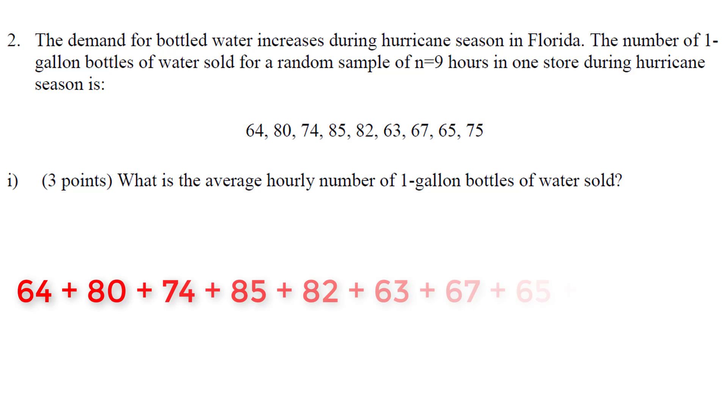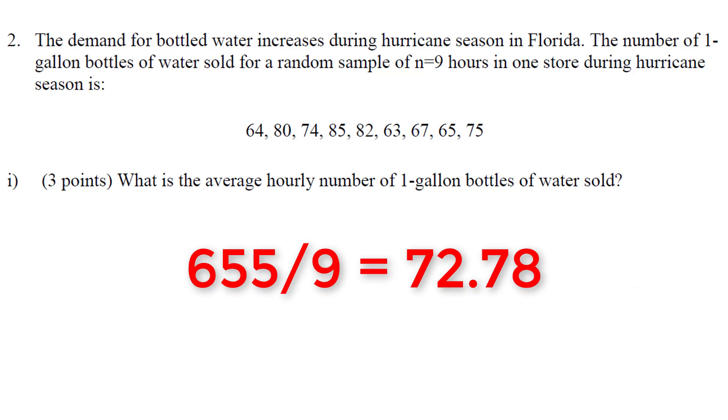When we sum up all the numbers, we get 655. Next we need to divide by the sample size, which is nine. Dividing by nine will get 72.78.